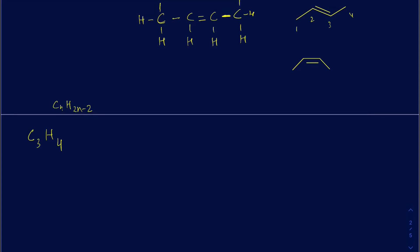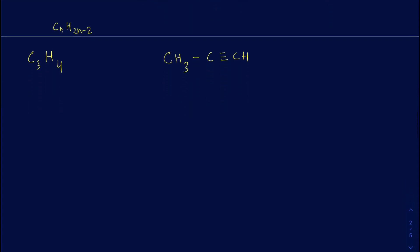For C3H4 as an alkyne, the condensed structure would be CH3, and then between the second and third carbon there is a triple bond. You want to make sure you have a total of four hydrogens and three carbons. In the expanded form, you can clearly see the triple bond between two carbons with a single bond, and the first carbon has three hydrogens.